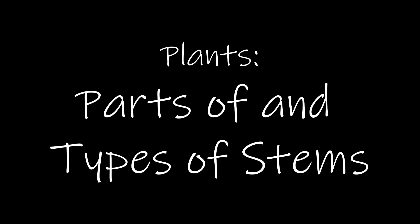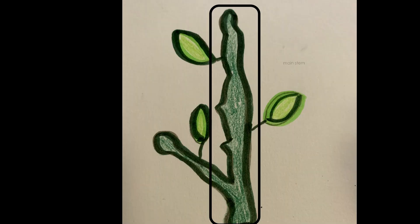The first thing we're going to be covering are parts of a stem. The stem, or the main stem, is the part of the plant that grows upward. It supports the leaves and fruit and brings water and minerals to all parts of the plant. Edible stems include celery and asparagus.